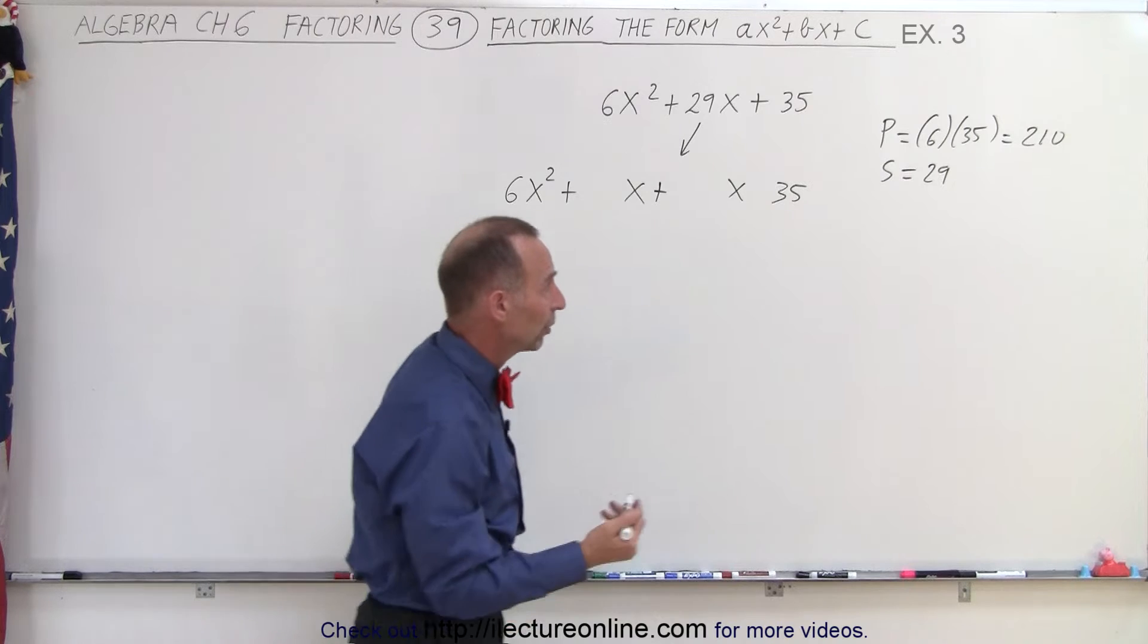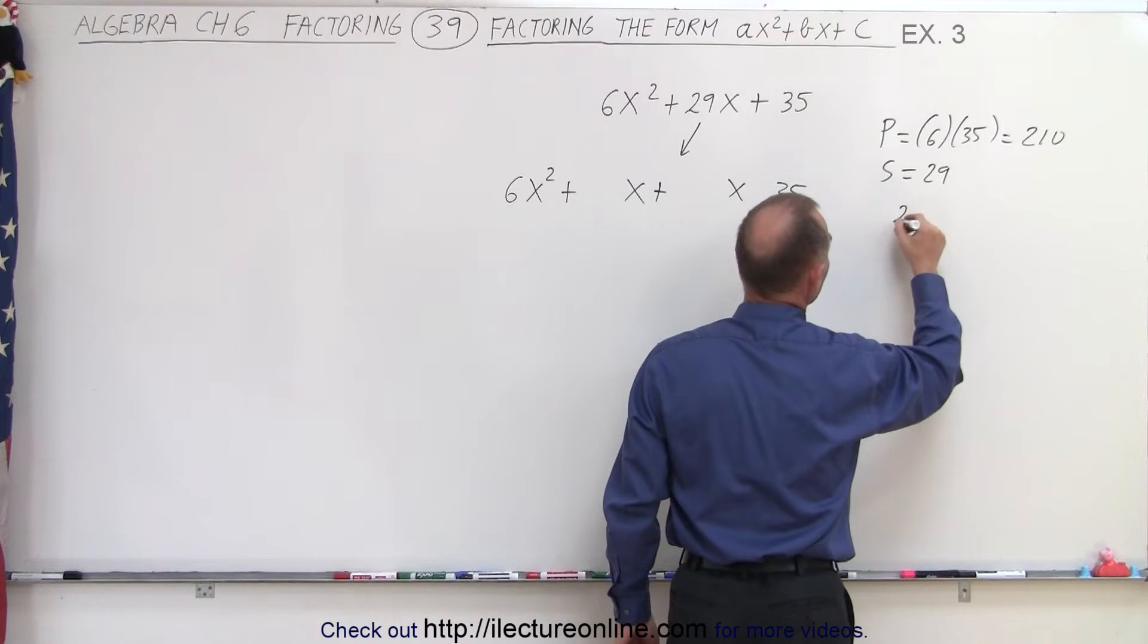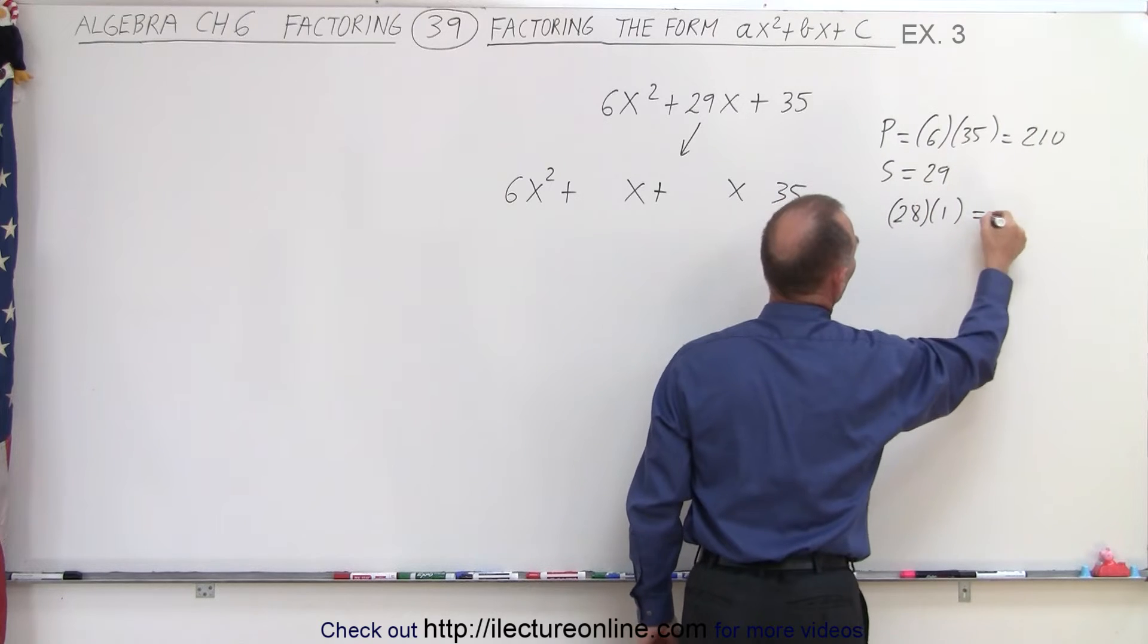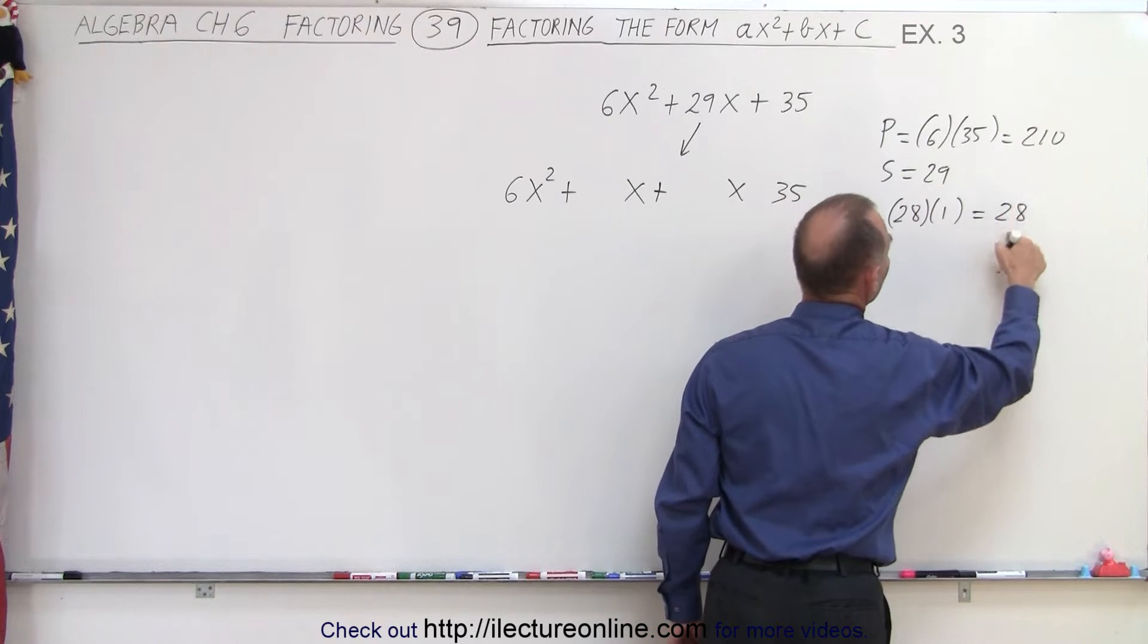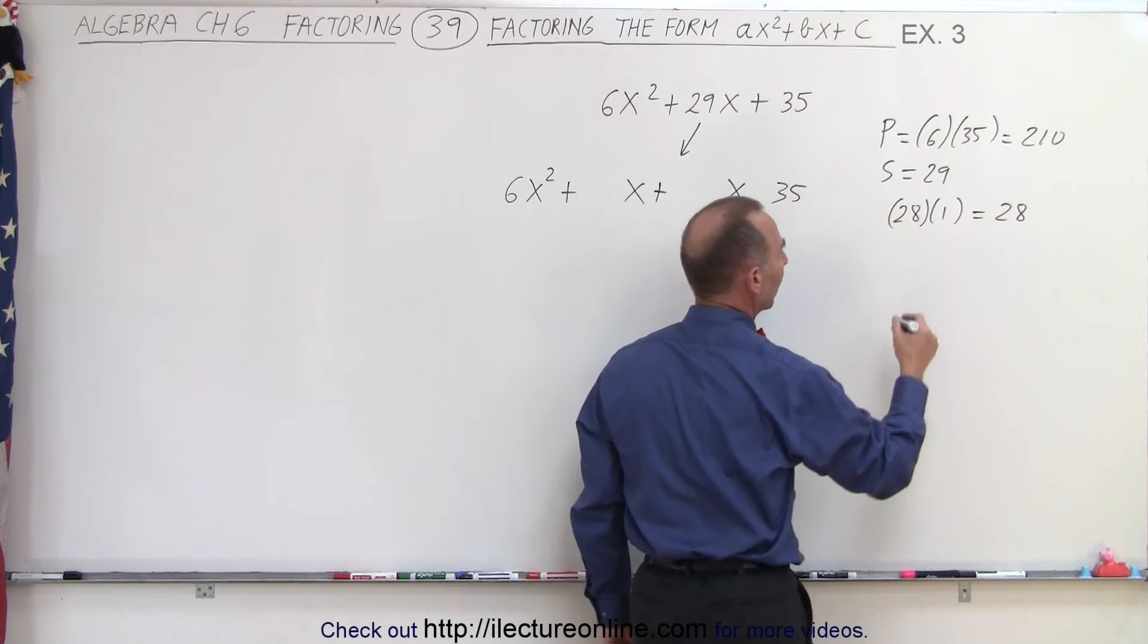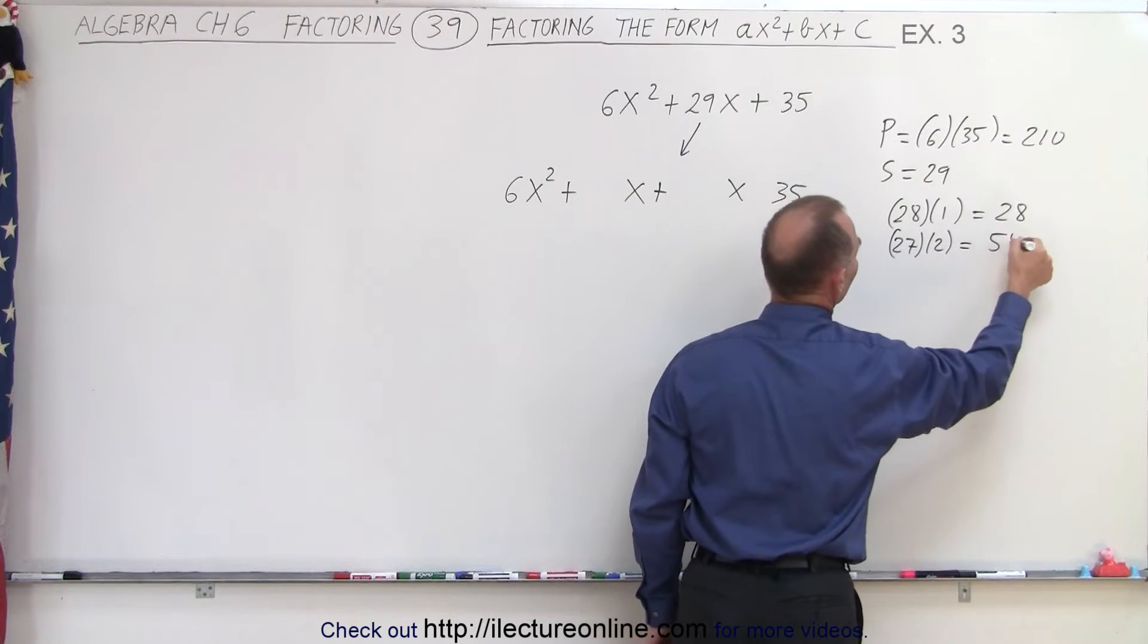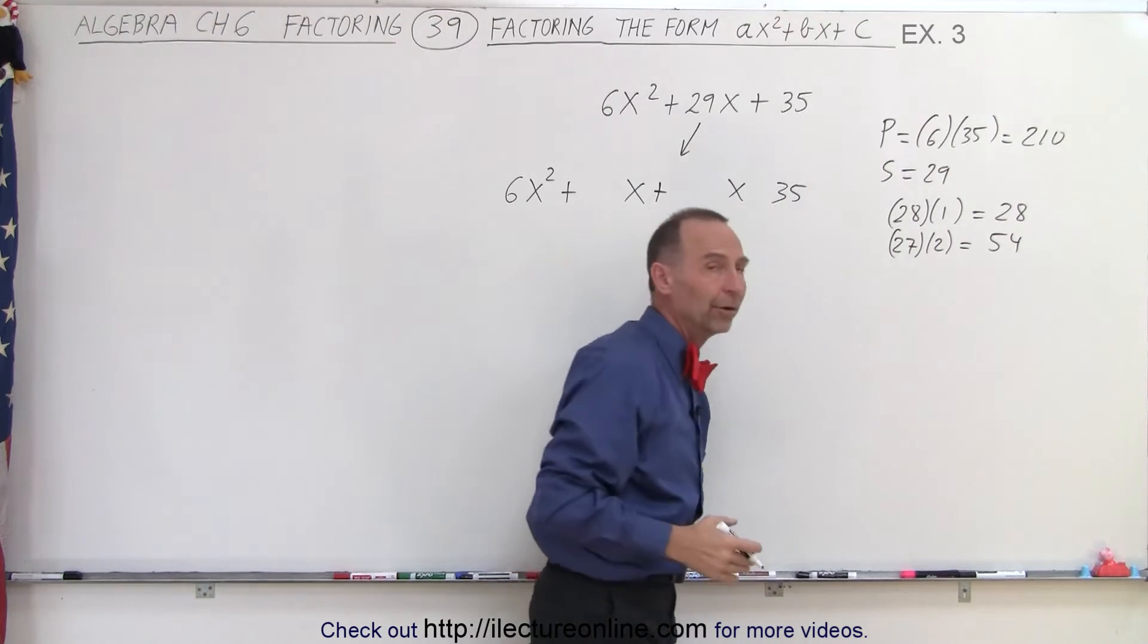We could try 28 and 1. When we add them, we get 29, but when we multiply them, we get 28, which is not 210. Then 27 and 2, when we multiply, we get 54. You can see the pattern.